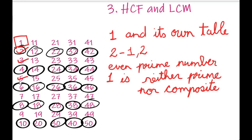Now we will check 9. The factors of 9 are: 1, 3, and 9 — it comes in 3's table as well as its own table. So we are getting more than 2 factors of 9. Therefore 9 is not a prime number — it is a composite number.